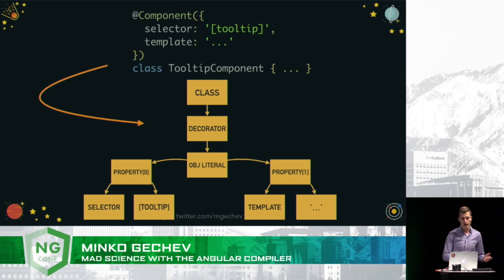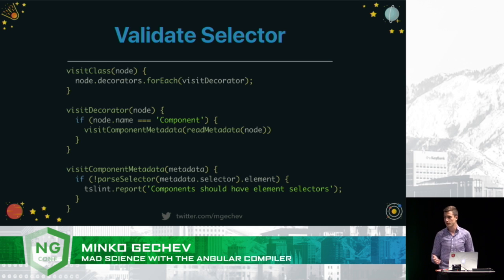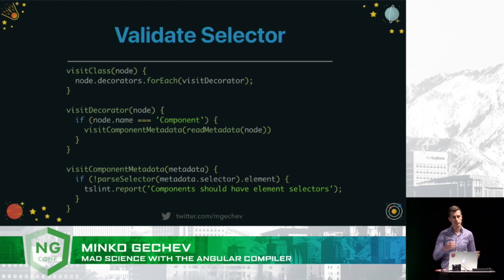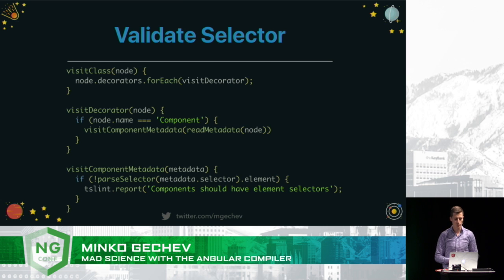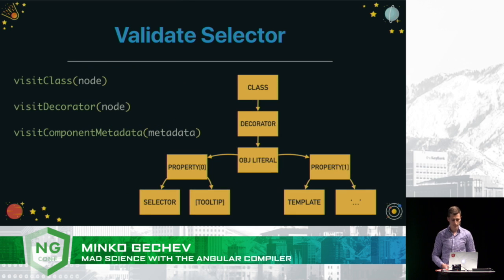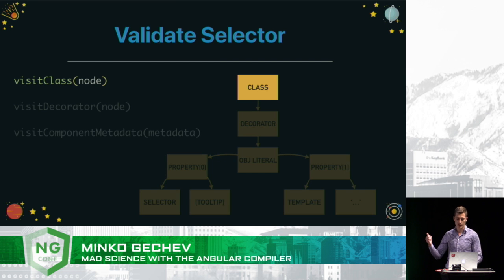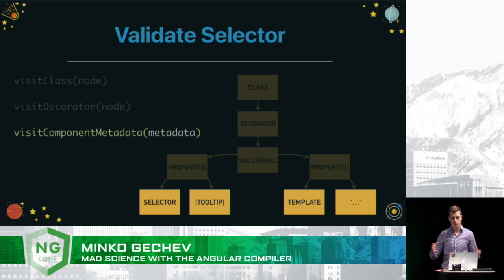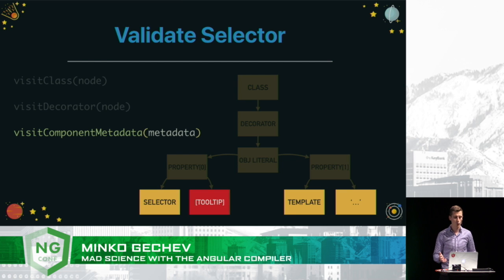Now, in order to prove that our component has a selector of the appropriate type, we just need to traverse this tree. The visitor pattern is very convenient for this. So we can just first visit the root node, which is the class element. Right after that, we're going to go through all the individual decorators. It will turn out that one of these decorators is Component. We're going to extract the metadata out of the object literal passed to the component decorator, and we're going to verify that the selector of the component is of type Element. If it is not, we're just going to report a warning. Here is how this looks visually — we are visiting the class root node, going to the decorator, extracting the metadata (the selector and the template), and in the end we're just going to throw a warning. That's it.